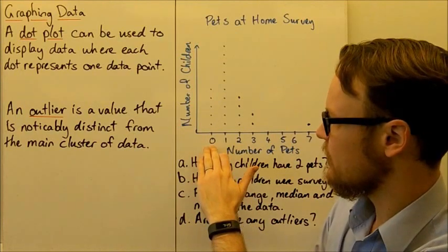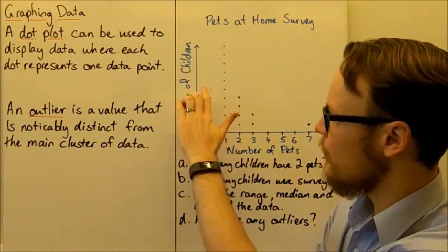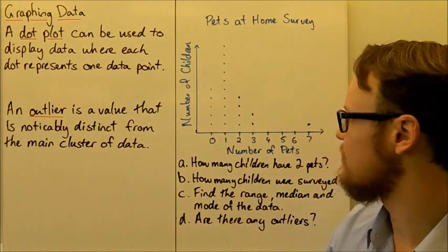So if we have a look at zero pets, one, two, three, four, five. Five dots there, so five children said they had zero pets.